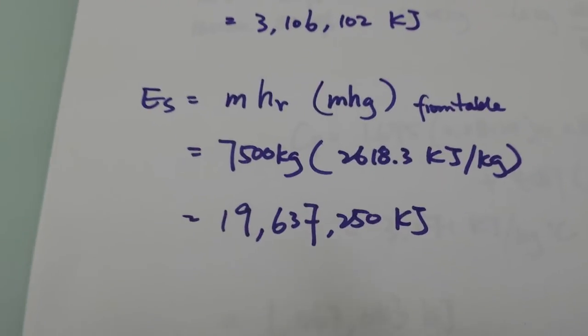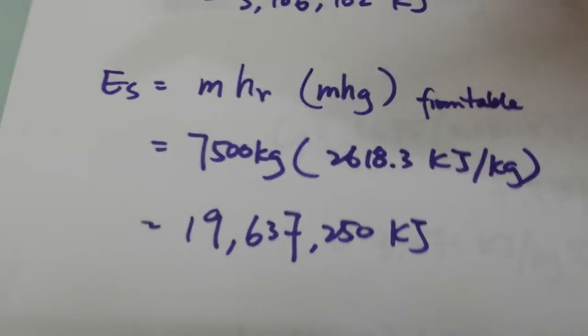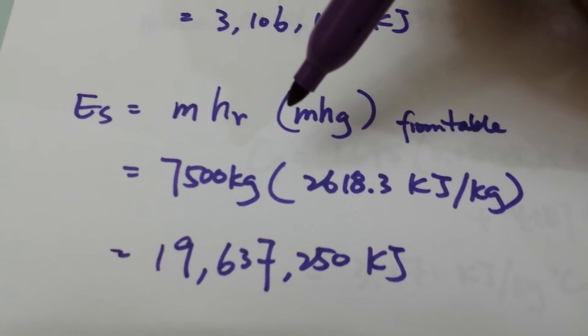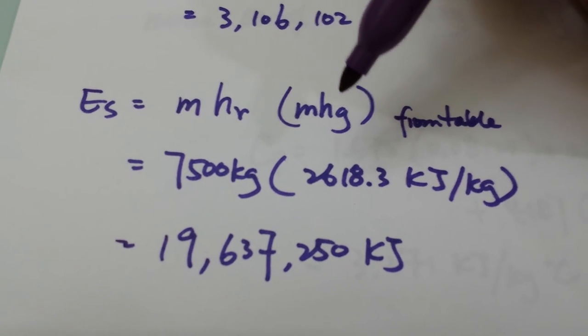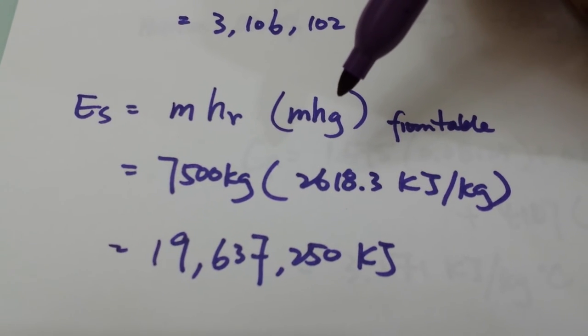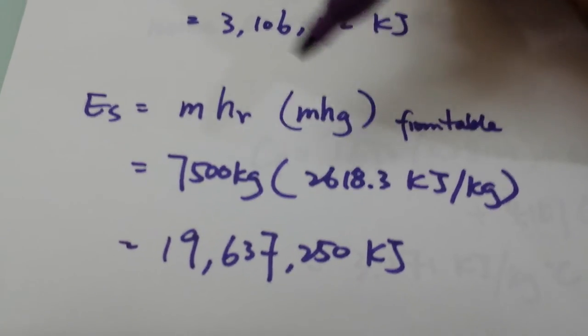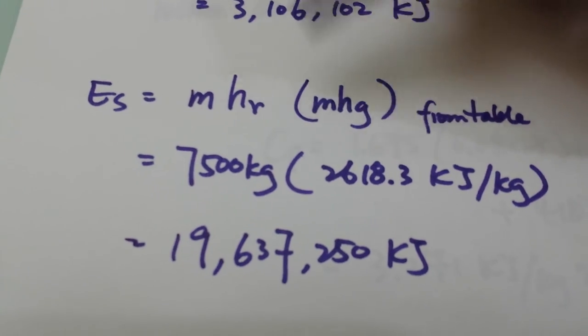The energy of the steam is actually very straightforward. We use our mass times the enthalpy of our steam. This is the steam at 65 degrees Celsius, and HV is the same as HJ.